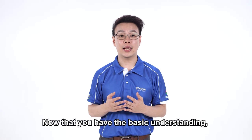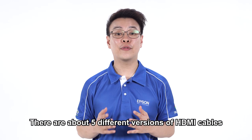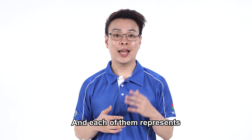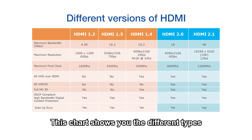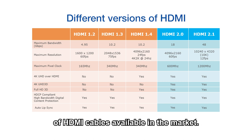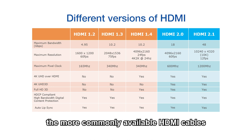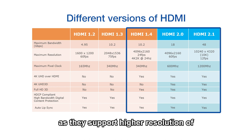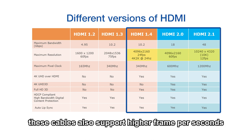Now that you have a basic understanding, I would like to shift your focus towards HDMI connectivity. There are about five different versions of HDMI cables and ports in the market today, and each of them represents different signal capabilities. This chart shows the different types of HDMI cables available. The more commonly available HDMI cables are version 1.4 onwards, as they support higher resolutions of up to 10K, especially for version 2.1. Generally, these cables also support higher frame rates per second.